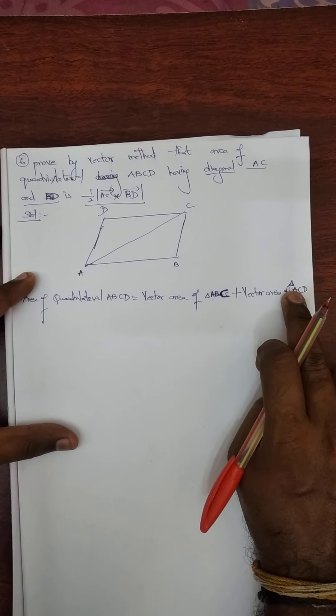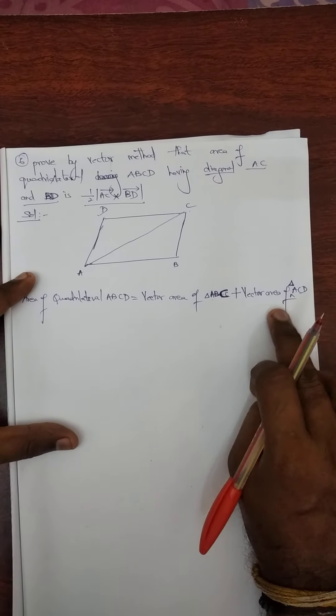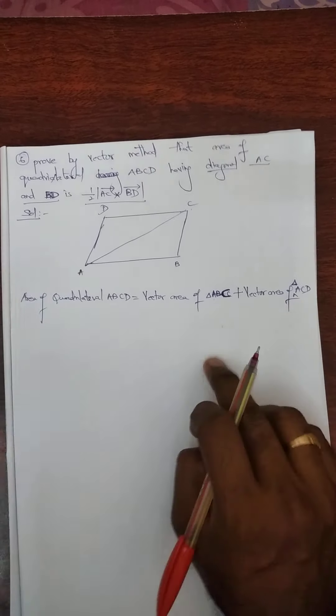I missed a triangle, so try the triangle. Vector area of triangle ACD — because this quadrilateral has two triangles. This is the first triangle ABC, another triangle ACD. So triangle ABC plus triangle ACD is nothing but quadrilateral ABCD.